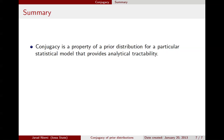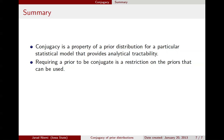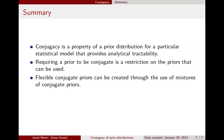In summary, conjugacy is a property of a prior distribution for a particular statistical model that provides analytical tractability. Requiring a prior to be conjugate restricts the possible priors you could use, but through the use of mixture distributions these priors can be as flexible as you'd like. You can have three-component mixtures, four-component, or even infinite-component mixtures and they would still be conjugate. I'd also like to point you to the Wikipedia list of conjugate prior distributions.